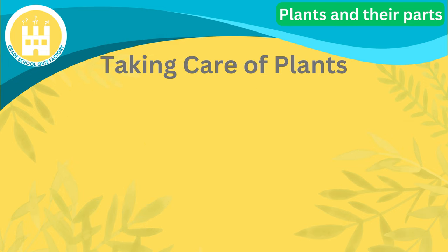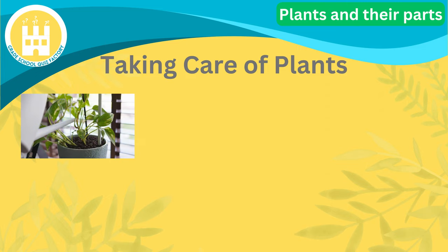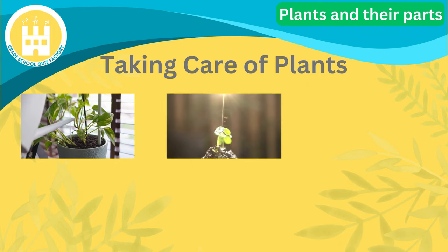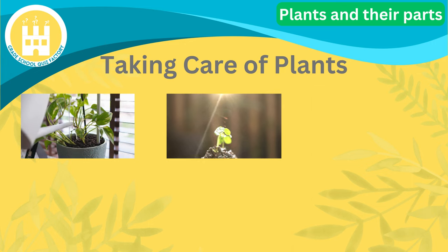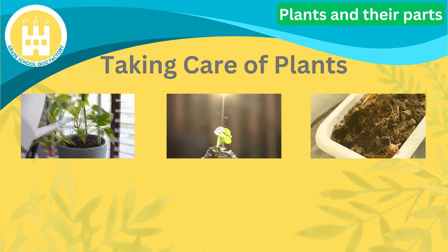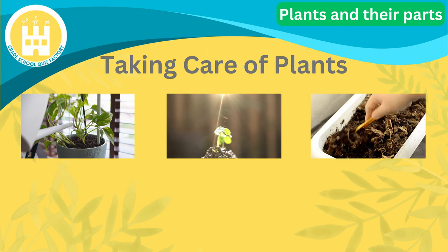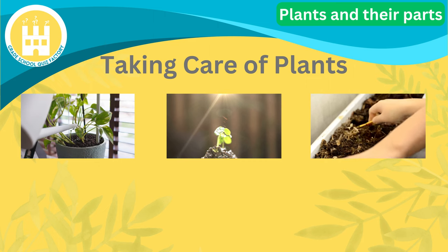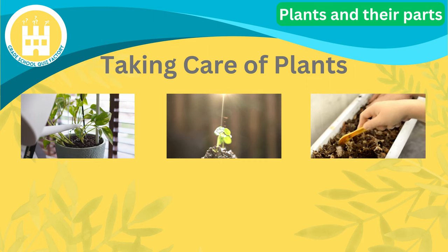Now that we know about the parts of plants, let's talk about how to take care of them. Water: just like we need water to survive, plants also need water to stay healthy and grow. Water your plants regularly, but be careful not to overwater them. Sunlight: most plants need sunlight to make food through photosynthesis. Place your plants in a spot where they can get enough sunlight each day. Soil: plants need good soil to grow. Make sure the soil is rich in nutrients and drains well. You can also add compost or fertilizer to help your plants grow stronger.